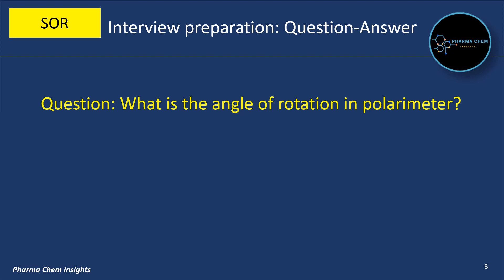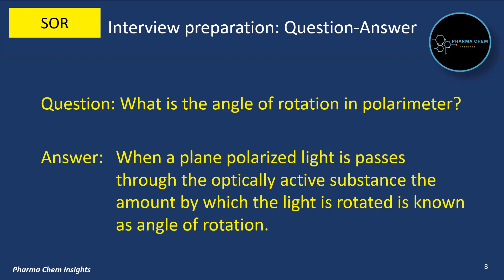What is the angle of rotation in polarimeter? When a polarized light passes through the optically active substance, the amount by which the light is rotated is known as the angle of rotation.